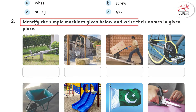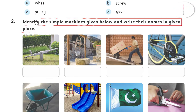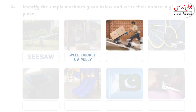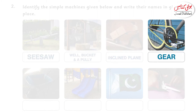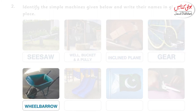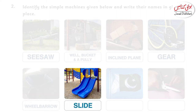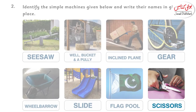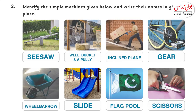Now move on to question number 2: identify the simple machines given below and write down their names. They have given you things like a seesaw, a well with a bucket (a pulley is connected to the bucket), an inclined plane, a gear, a lever-type machine called a wheelbarrow, a slide, a flag pole, and a pair of scissors. Read the chapter thoroughly and then do this activity by yourself.